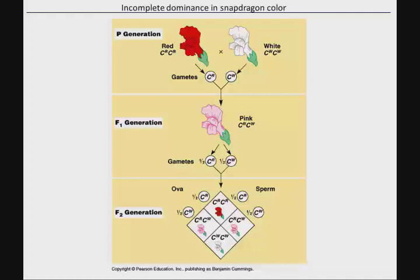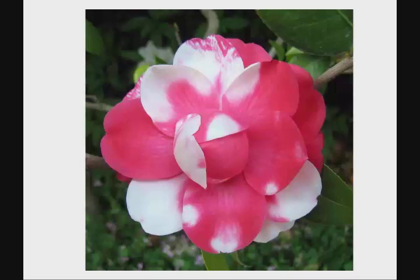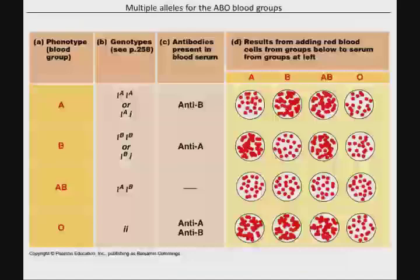The next variation is codominance, where both alleles are expressed. I don't have an intermediate phenotype — rather, I see both. You would see a flower that is both white and red. The classic example we'll use for both codominance and for when you have more than two alleles is blood type.